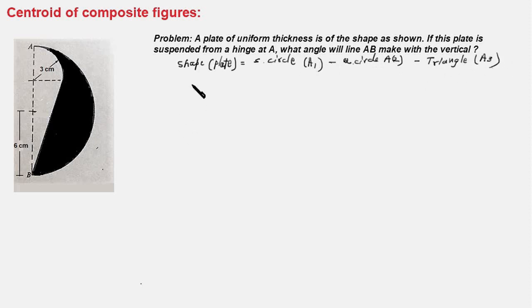So our composite shape is nothing but A1 minus A2 minus A3. Now we shall find out the centroids of the individual areas and put all that information in a tabular form, so as to avoid any confusion and reduce the chances of making arithmetical mistakes.